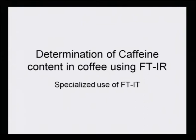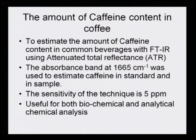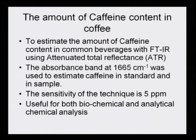There must be a way of analyzing and interpreting them. This was one very interesting case: determination of caffeine content in coffee and how FTIR is responsible for its analysis. The amount of caffeine content has to be estimated because in coffee manufacturing units, it is important to evaluate the caffeine content in seeds obtained from various sources. To estimate the amount of caffeine content in common beverages with FTIR using attenuated total reflectance — FTIR and ATR are both being used in this analysis.